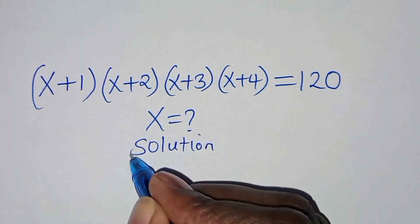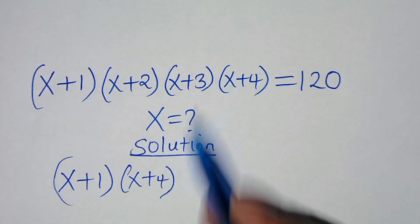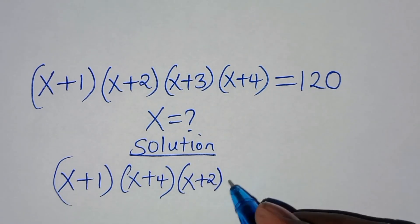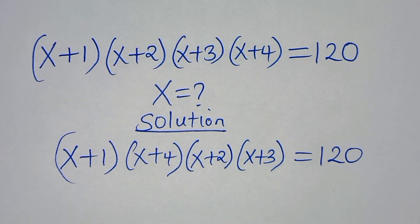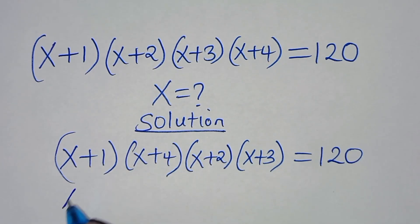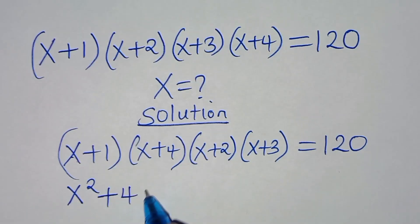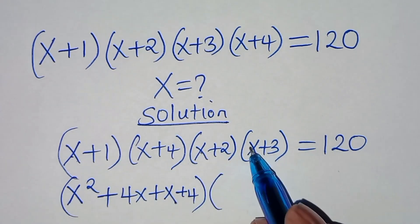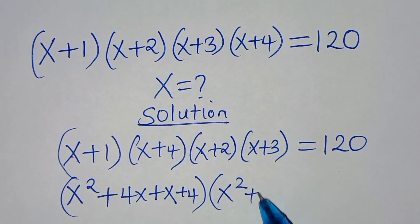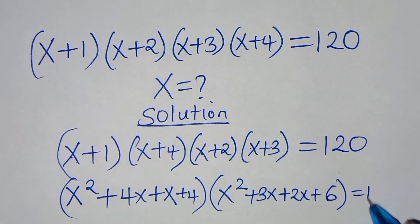From here we'll rearrange by grouping: (x+1)(x+4) multiplied by (x+2)(x+3). Expanding (x+1)(x+4) gives x²+4x+x+4, which is x²+5x+4. Expanding (x+2)(x+3) gives x²+3x+2x+6, which is x²+5x+6. This is equal to 120.